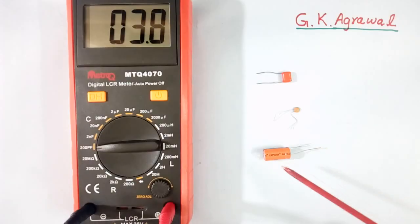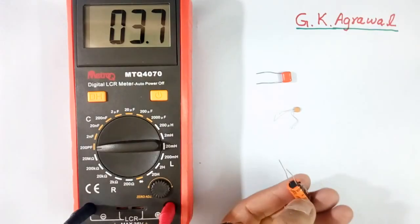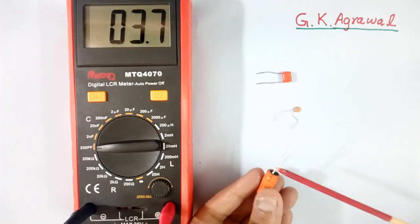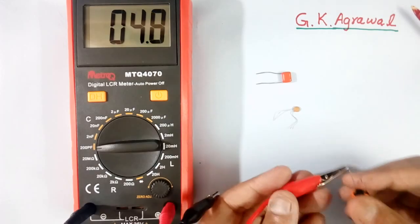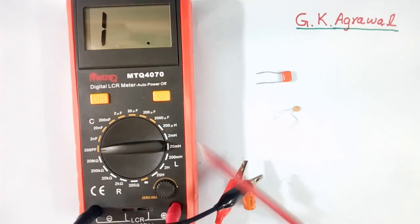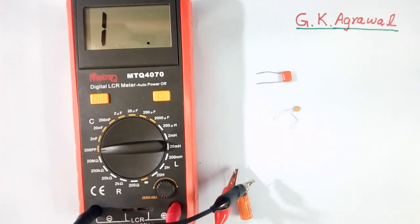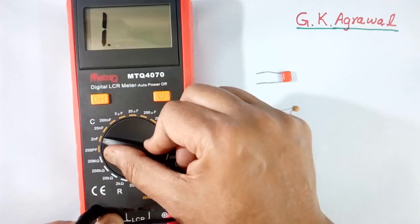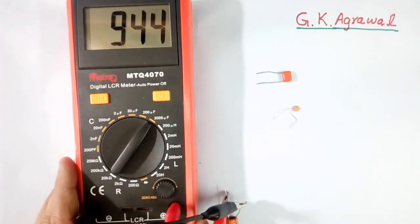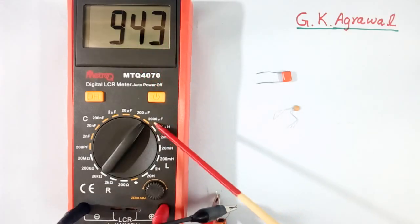Now we will see how to measure the value of a capacitor. I have three capacitors; we will measure the value of these three. This is an electrolytic capacitor — it has one long terminal and one short terminal. The long one is positive, the short one is negative. So we will connect the long one to the red color positive terminal and the other one to the negative terminal of the LCR meter. I have set my scale at 200 pF. It is reading 1, which means the value of the capacitor is more than this. So I will change the scale. I will go on increasing till I get the correct value. Now it is coming correct — the value of this capacitor is 945 mF. I kept the scale at 2000 mF.